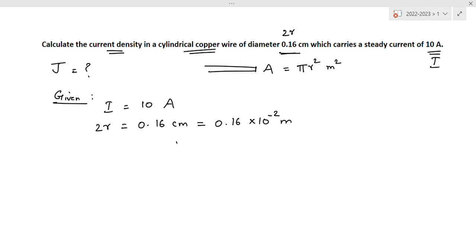So radius r is equal to 0.16 divided by 2, this is 10 power minus 2 meter. Therefore r is equal to 0.08 into 10 power minus 2 meter. 16 by 2, that is 8. 0.08 into 10 power minus 2 meter.